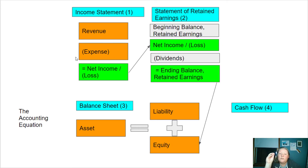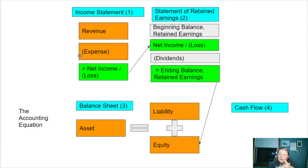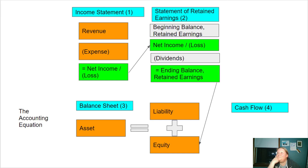If you understand how the five types of accounts — assets, liabilities, equity, revenue, and expense — come together to make these statements, the rest of accounting is not hard at all. I hope this made sense; let me know if you have any questions.